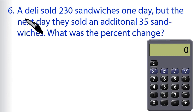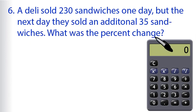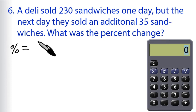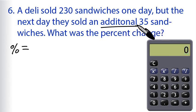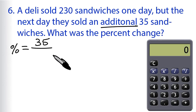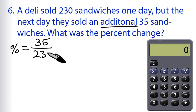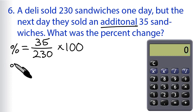For problem 6, Adelie sold 230 sandwiches one day, but the next day they sold an additional 35 sandwiches. What was the percent change? The formula again: percent change equals the absolute change. It's an additional 35 sandwiches, so that's positive 35, divided by the original amount, which is 230 sandwiches, then multiplied by 100.